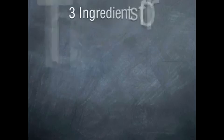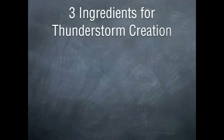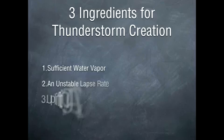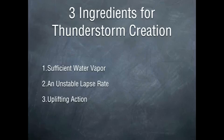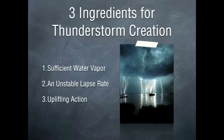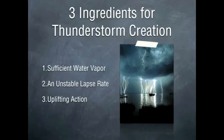So what are the three ingredients we need to create a thunderstorm? The first is sufficient water vapor, or moisture in the air. The second is an unstable lapse rate — sometimes called a temperature inversion — or a change in temperature. And the last is an uplifting action, or something to put all that warm, moist air into motion.